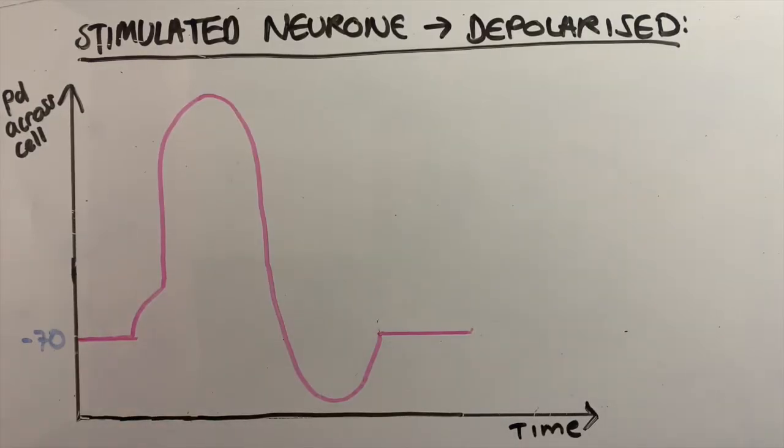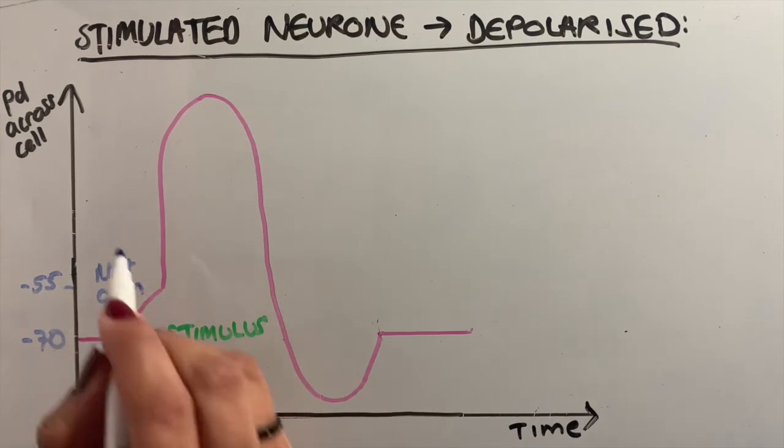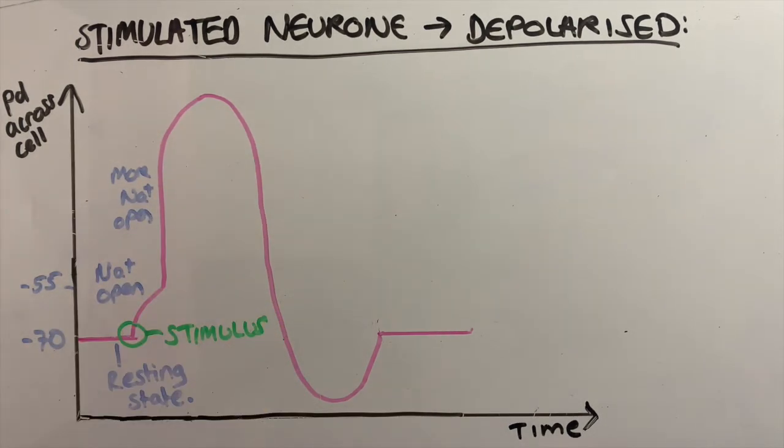So now let's look at what happens when the neuron is stimulated. This graph will appear many times throughout your studies and also might come up in the exam. When a stimulus happens, which is shown in green, the sodium ion channels open and the membrane becomes more permeable to sodium. Sodium ions diffuse into the neuron down the sodium ion gradient. This makes the inside of the neuron less negative.